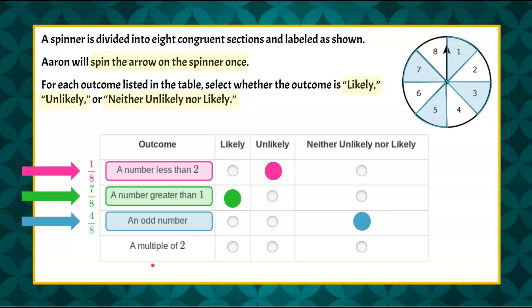Now we have an expected outcome of a multiple of two. So a multiple of two is all the factors, any number that has a factor of two. So let's see. Two times one is two, two times two is four, two times three is six, two times four is eight. And we've completed our options here on our spinner.